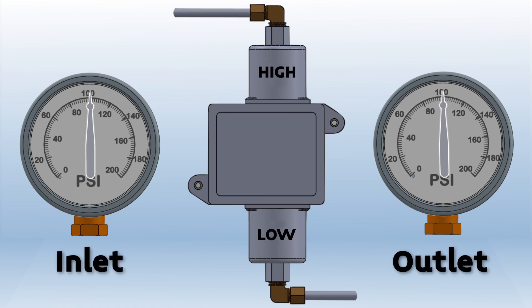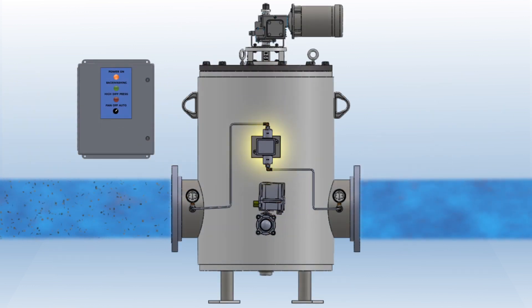As the screen becomes blocked, the inlet pressure will begin to rise over the outlet pressure. Once the pressure differential hits the set point, the differential pressure switch sends a signal to the control panel to initiate a cleaning cycle.